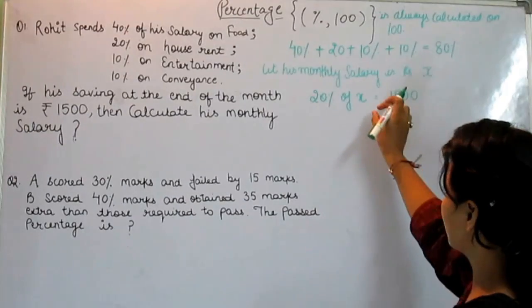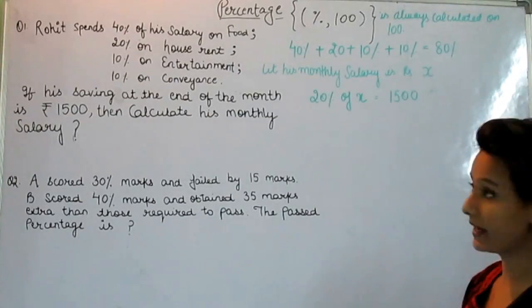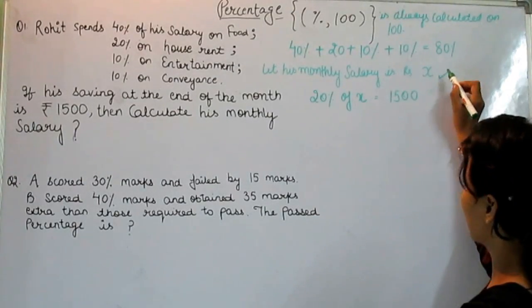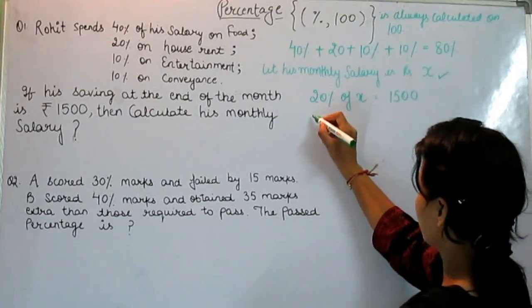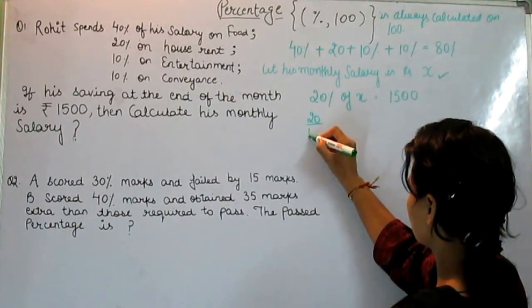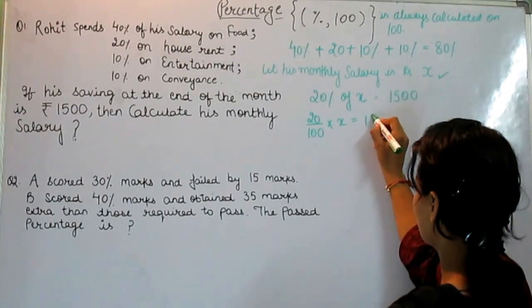According to our solution, he spends 80 percent and he is left with 20 percent of his total monthly salary. So from here we can get the value of x. 20 percent of x is equal to 1500.